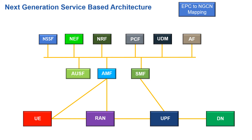Moving to the right, we have the Application Function. The AF works very closely with the PCF, the Policy Control Function, to enforce policies and ensure different types of traffic have the priority required as they pass through the network. For example, if it's a VoLTE call going through the IMS core, the AF will help prioritize that traffic, ensuring it has the correct level of prioritization through the network.